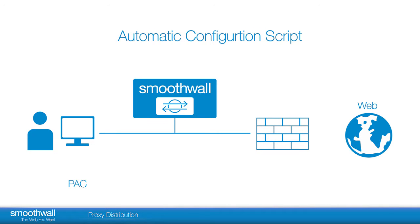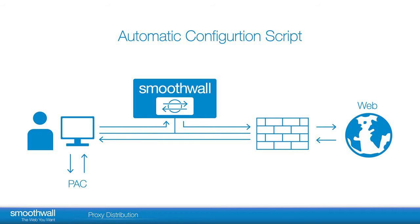The Automatic Configuration Script: the SmoothWall proxy provides a proxy pack file that can be used to automatically configure proxy settings in most internet browsers. To use the Automatic Configuration Script, go to WebProxy, WebProxy, Automatic Configuration. Each time a user session starts, the browser is configured with a path or URL to a pack file. The browser then requests the proxy pack file from the pack file server. Normal browsing continues through the SmoothWall with the settings provided by the pack.